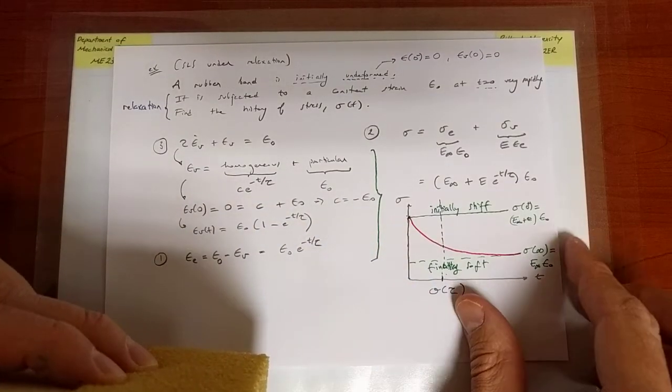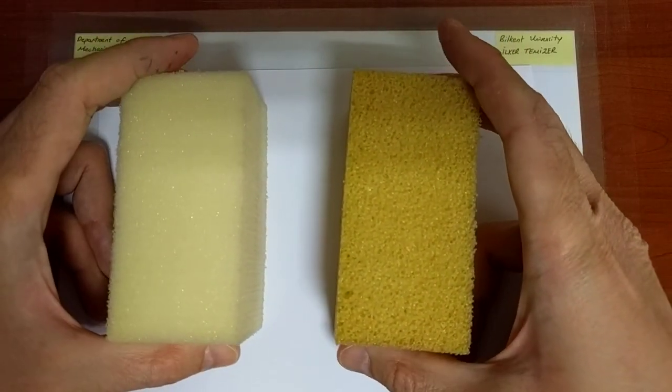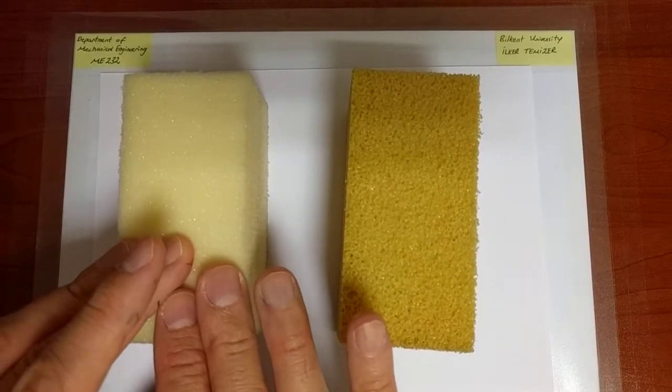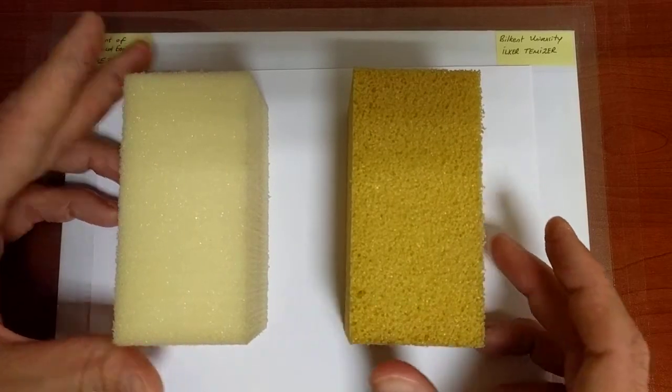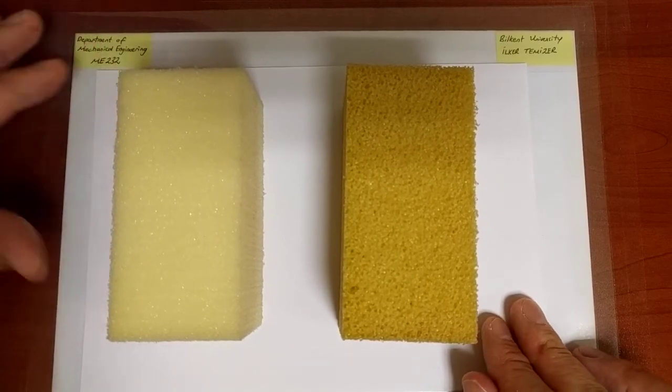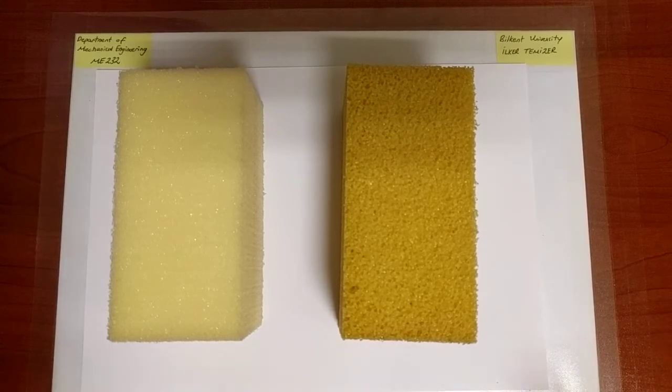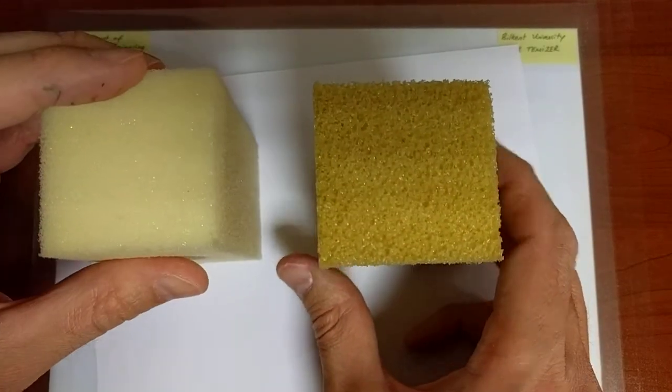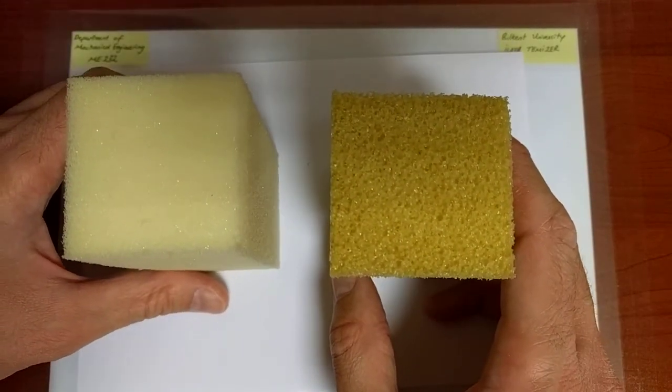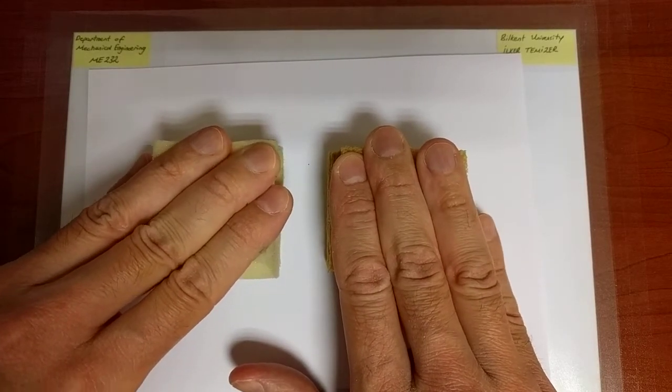These two specimens are both polymers, and hence they are both actually viscoelastic. On the other hand, one is more close to being elastic, the other one more strongly viscoelastic. What do I mean by that? I mean that you'll be able to observe the relaxation time quite accurately. Relaxation time gives us an idea about the characteristic response time of the material. It doesn't have to be a relaxation experiment, it could be a creep experiment, we could also observe it there.